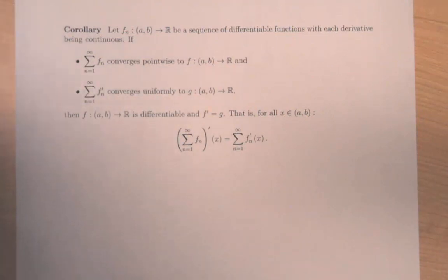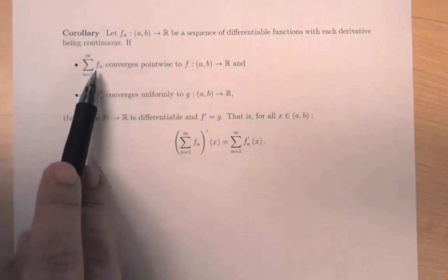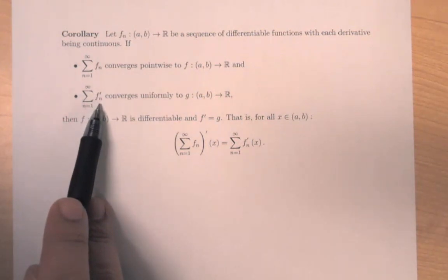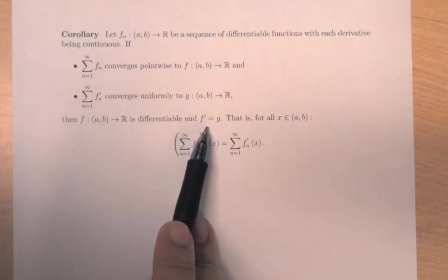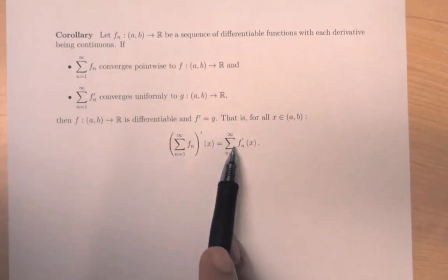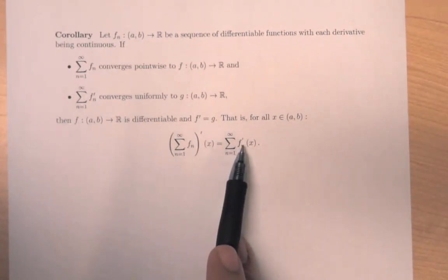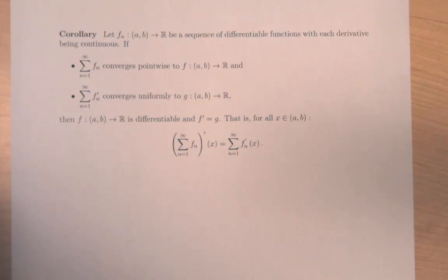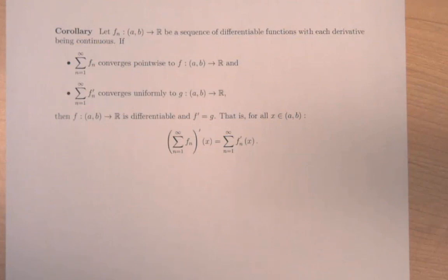Similar to the integral result, we can adapt our derivative result to series. If f_n is a sequence of differentiable functions with continuous derivatives, if the series Σf_n converges pointwise to f and the series of derivatives Σf_n' converges uniformly to g, then f' = g. In other words, the derivative of an infinite sum equals the infinite sum of derivatives, provided these two conditions are met. We'll leave the proof as an exercise, as it's very similar to how we adapted the integration theorem from sequences to series.